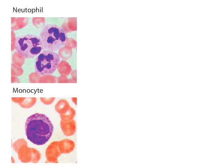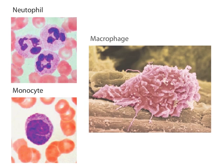Neutrophils make up the vast majority of white cells in the blood. These cells, along with monocytes, can engulf microbes by a process called phagocytosis. Monocytes can migrate out of blood vessels into various tissues and differentiate into a few cell types, including macrophages.